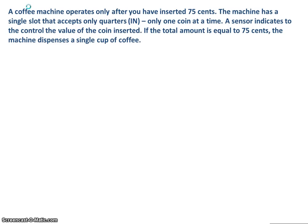Let's start with a description of the problem. A coffee machine operates after you've inserted 75 cents. The input it accepts is only quarters, just to simplify the logic — one coin at a time. When a total of 75 cents is received in the machine, the machine allows you to brew a single cup of coffee and dispenses that as the output.